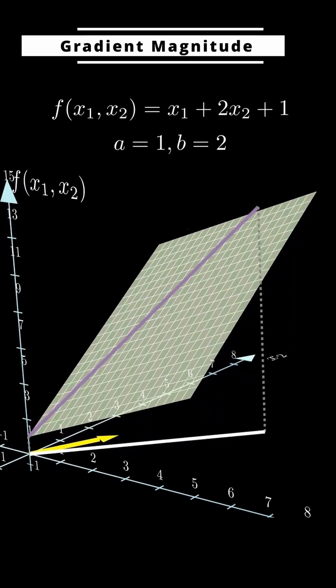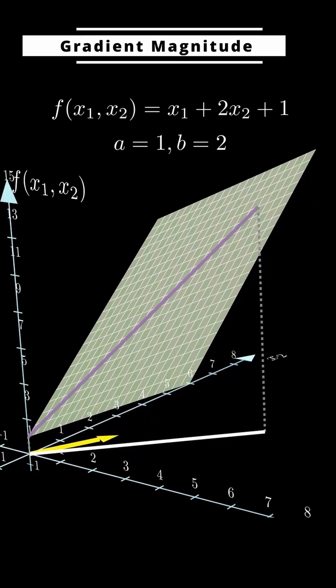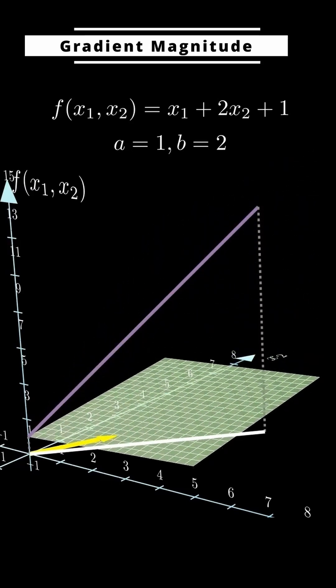In single variable functions, the absolute value of the derivative gave us the steepness of the curve, right? Just one line to worry about.